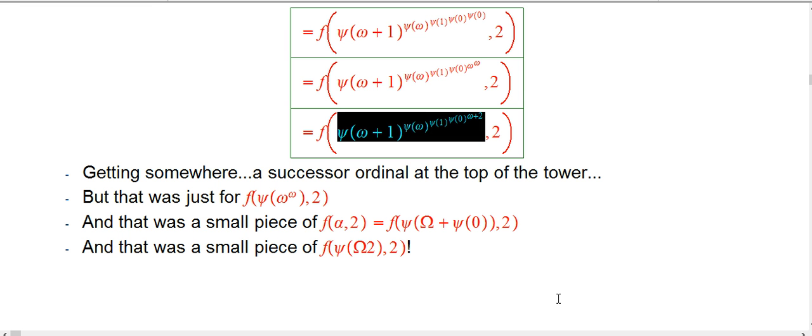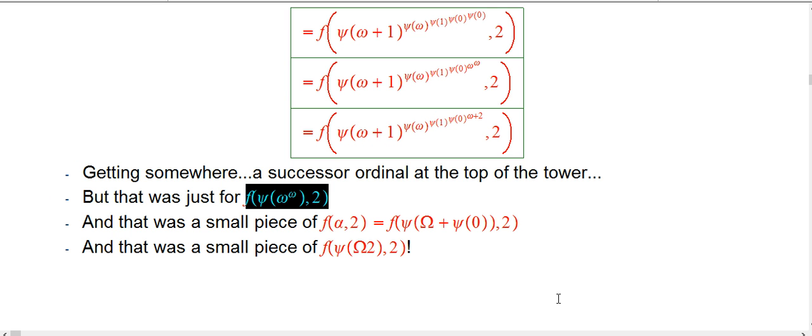And now, if we wanted to continue that, we could actually start using just plain old rules of exponents to start breaking that out. And we've seen examples of that a bit in a few videos ago. So, I'm not going to continue that expansion, but I just want to point out that we're not even remotely done here, even expanding the F. And that was just for a very small piece, F of psi of omega to the omega comma two, which was a small piece of F alpha comma two, which was that stage where we had done psi of zero and just one application of psi of big omega plus X, again, with just a two, a measly two input. And then that's a piece, a small piece of the real thing, which was F of psi of big omega two comma two.